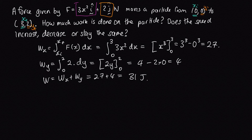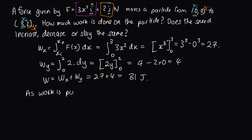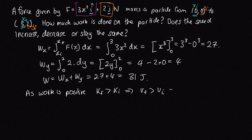Does the speed increase, decrease, or stay the same? In this case we've done positive work. If positive work is done, it means the final kinetic energy must be greater than the initial kinetic energy from the work-kinetic energy theorem. So the final speed is greater than the initial speed — the particle has sped up.